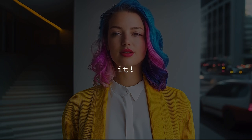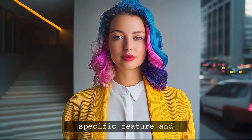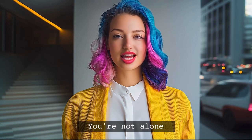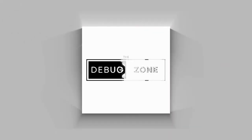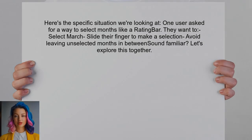I totally get it. It can be really frustrating when you need a specific feature and can't find it anywhere. You're not alone in this. Many developers face similar challenges when trying to create intuitive user interfaces. Here's the specific situation we're looking at: one user recently asked for a way to select months like a rating bar, where they can select March and slide their finger to make a selection without leaving any unselected months in between. Let's explore how we can tackle this together.